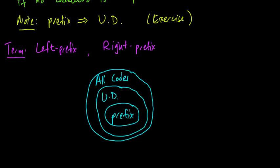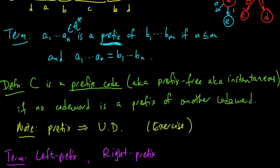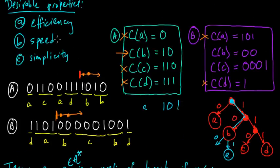We can essentially ignore all these other uniquely decodable codes that are not prefix, because what the Kraft-McMillan inequality is going to tell us is that for any uniquely decodable code, there is a prefix code which is just as good in terms of efficiency, in terms of our criterion here, in terms of how good a compression it obtains.